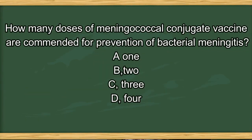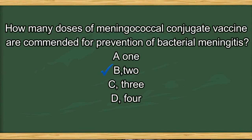Next question. How many doses of meningococcal conjugate vaccine are recommended for prevention of bacterial meningitis? A. 1. B. 2. C. 3. D. 4. The answer is B. The meningococcal conjugate vaccine is given in two doses to prevent bacterial meningitis. The first dose is recommended for all 11 to 12 year olds, with a booster dose given at age 16.